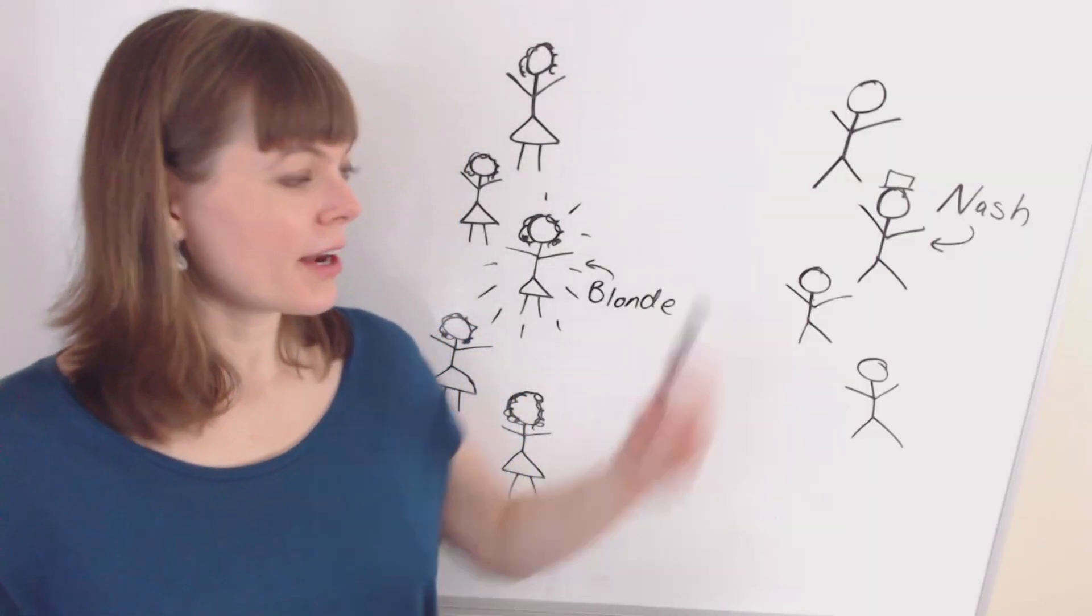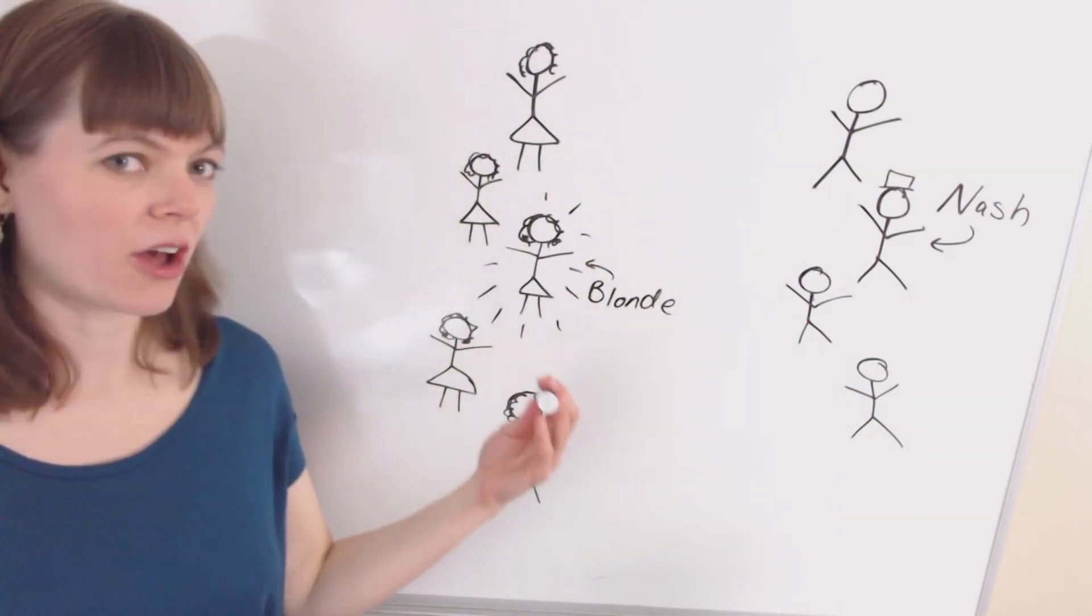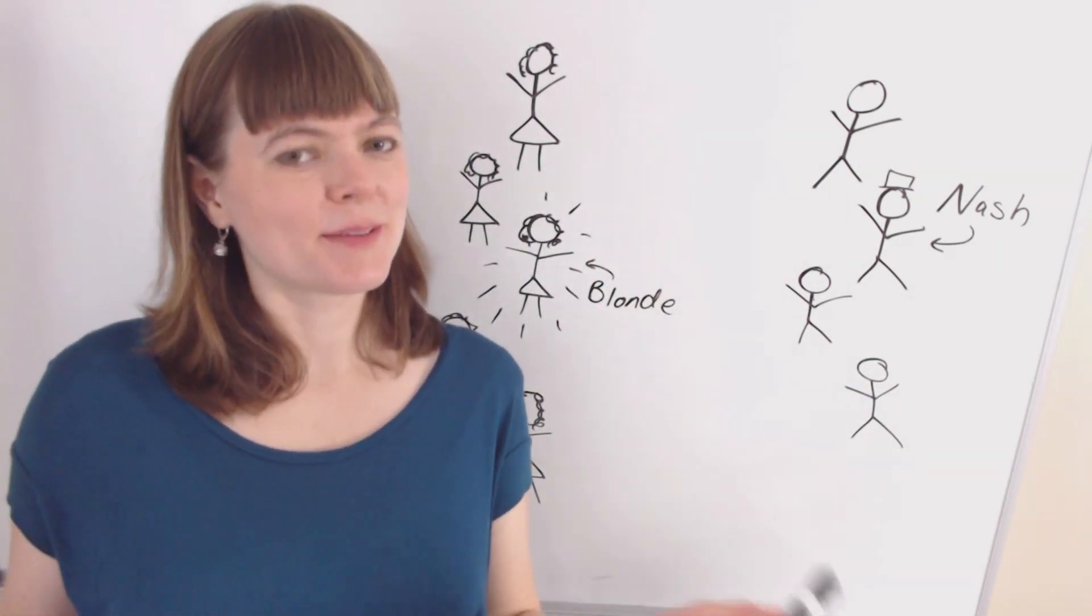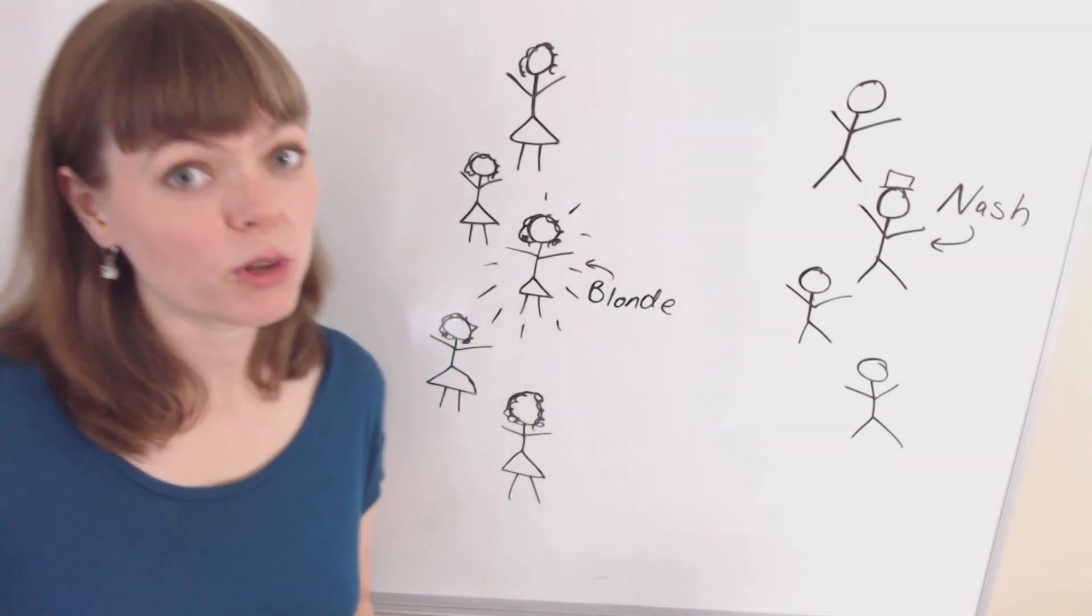The scene opens with four men in the bar, including John Nash, and five women walk in, including a blonde that the movie assumes is the most attractive from among the women. That's a false assumption, but we'll go with it.